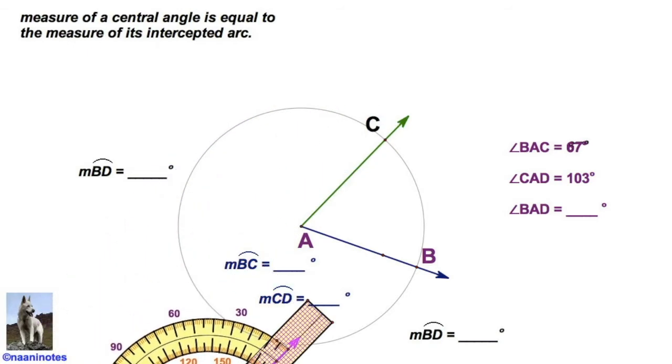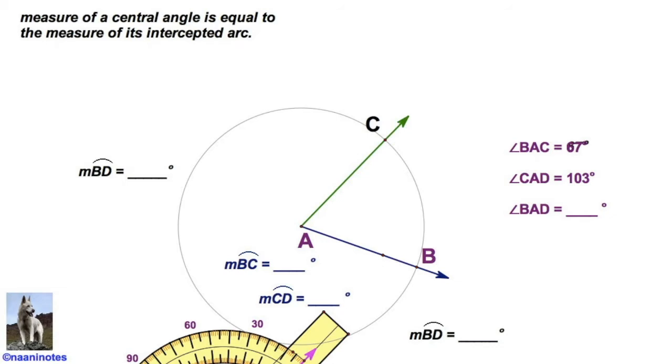See, we're going to call this angle a central angle because BAC has its center, has its center right there in the center of the circle. And now I'm going to introduce another vocabulary word. We're going to say it intercepts this arc. That means it cuts through the circle. It carves out this arc BC or CB.